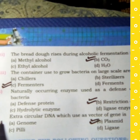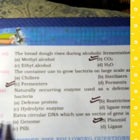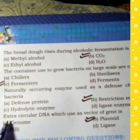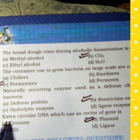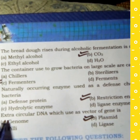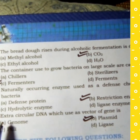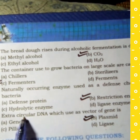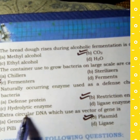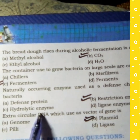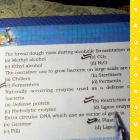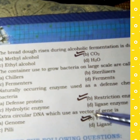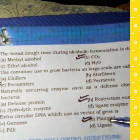MCQ number 10: Extracellular DNA which is used as a vector of the genome — the correct answer is option B, Plasmid.